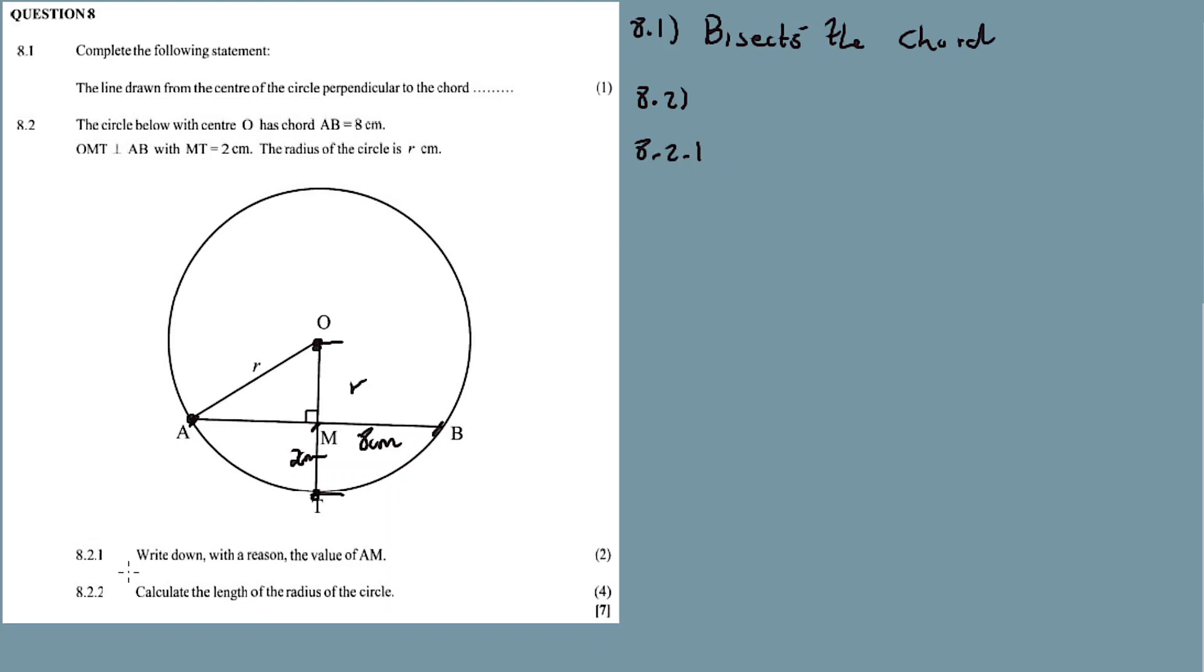8.2.1: Write down with the reason the value of AM. AM is equal to 4 centimeters. The line from center to the chord bisects the chord. Therefore, it is a line from center is a perpendicular bisector of the chord. This is the reason. So it's 4.